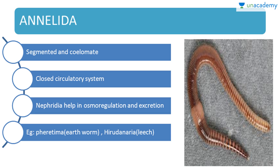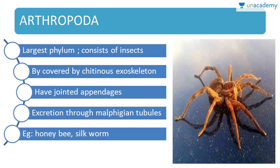Moving on to Annelida — they are segmented and coelomate; segmentation is their most distinctive feature. They have a closed circulatory system, and nephridia help in osmoregulation and excretion — nephridia are a peculiar feature of Annelida. Examples: Pheretima (earthworm) and Hirudinaria (the blood-sucking leech).